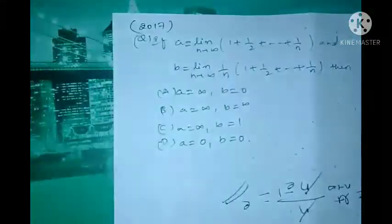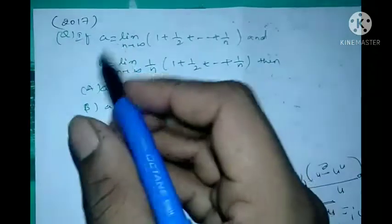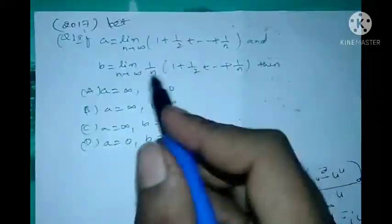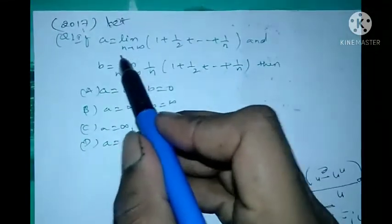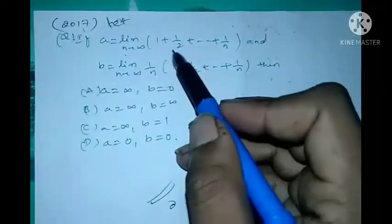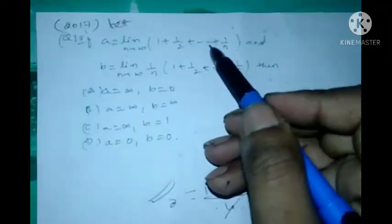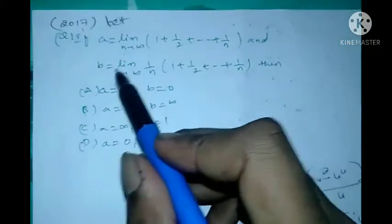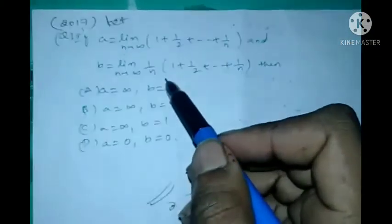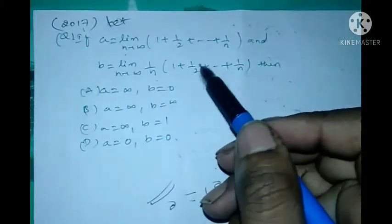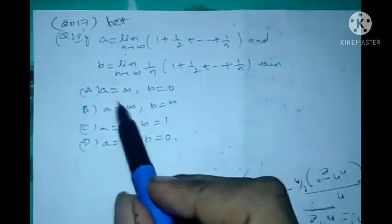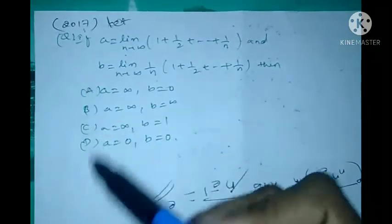Moving on to another problem asked in the 2017 KSET Mathematical Sciences exam. Let A = lim (n→∞) of (1 + 1/2 + … + 1/n), and B = lim (n→∞) of (1/n)(1 + 1/2 + … + 1/n). Four options are given.